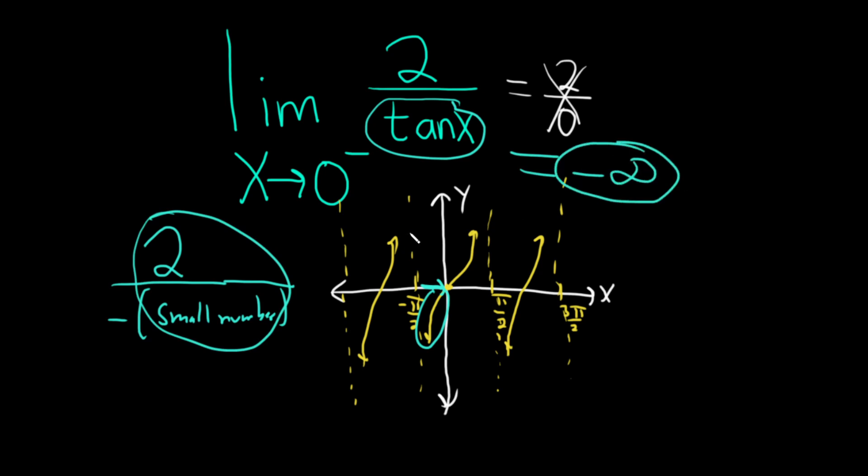So in this case the limit does not exist, but we write negative infinity to describe what's happening to 2 over the tangent of x. When x approaches 0 from the left, the function decreases without bound. I hope this video has been helpful. Good luck.